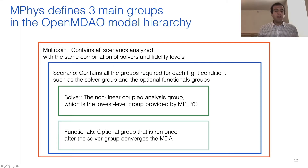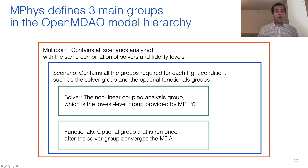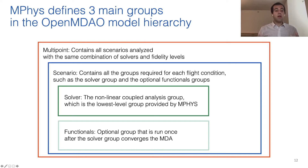mPhys defines three main groups in the OpenMDAO model hierarchy. On the top level, we have the multipoint group that contains all the scenarios analyzed with the same combination of solvers and fidelity levels. Under each multipoint group, we add scenarios to represent each flight condition, which contain the groups required for each flight condition separately, such as the solver group and the optional functional group. Under the scenario group, we have the main solver level — the nonlinear coupled analysis group, which is the lowest level group provided by mPhys. After the solver group is converged, optionally, solvers can add their own functional groups or components, which are run once after the solver loop converges.